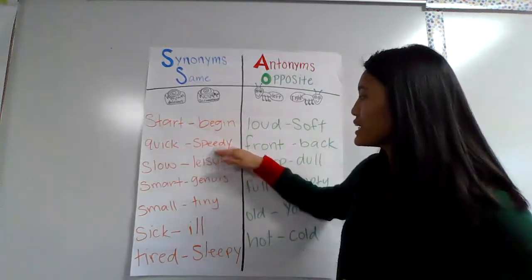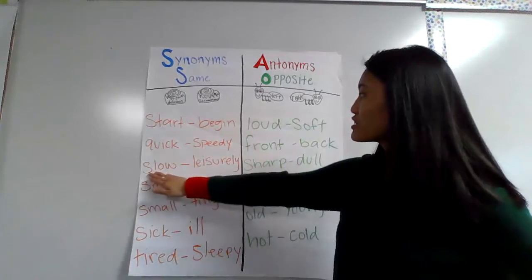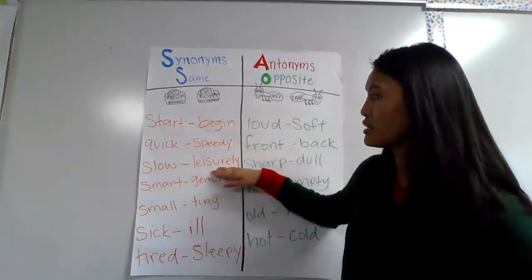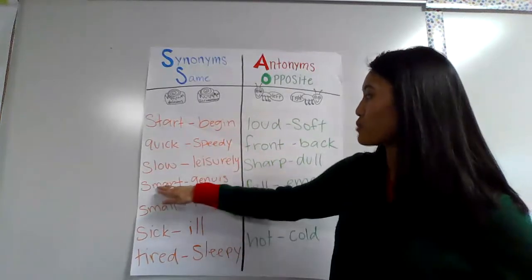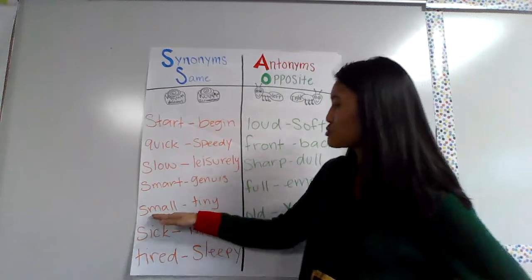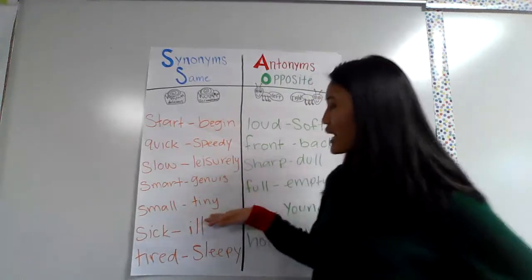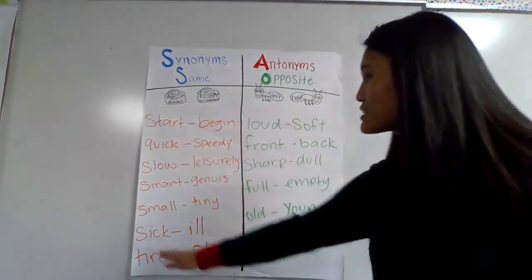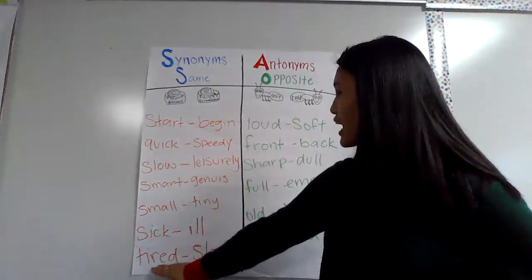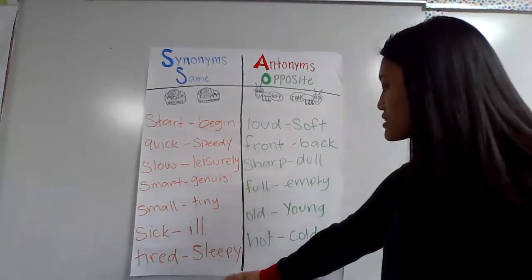Quick, speedy. Slow, leisurely. Smart, genius. Small, tiny. Sick, ill. And tired, sleepy.